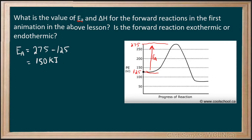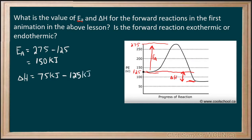When we're talking about the delta H value, what we look at is where did we start from and where did we end. This value here is our delta H. To calculate that, we end up at 75 kilojoules, and we started off at 125 kilojoules. The difference between the two is minus 50 kilojoules, making this an exothermic reaction.